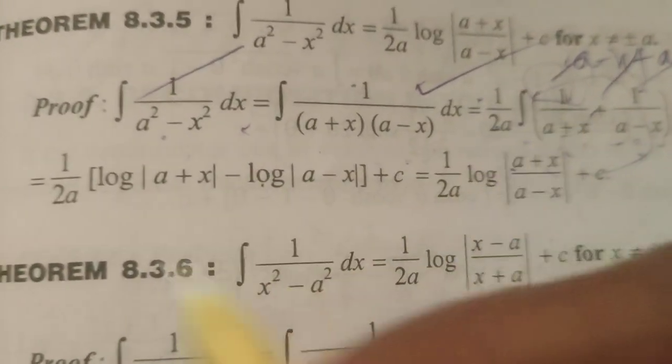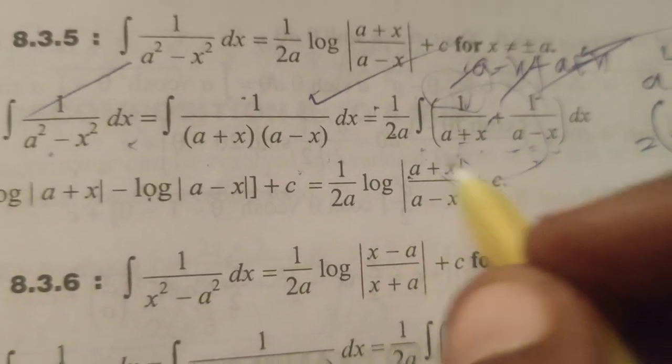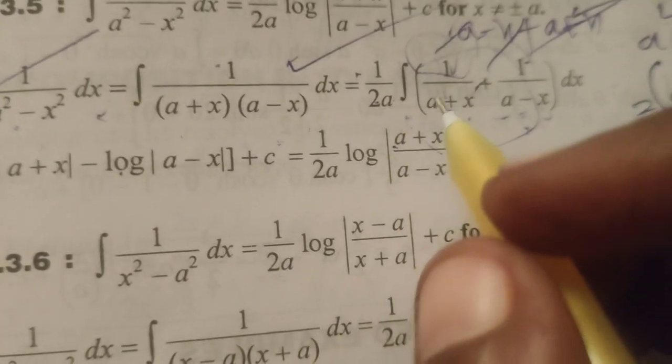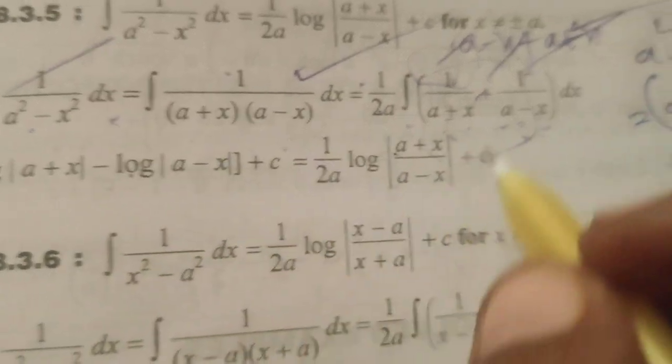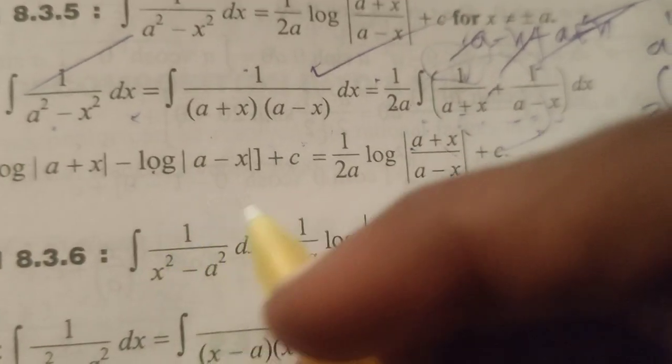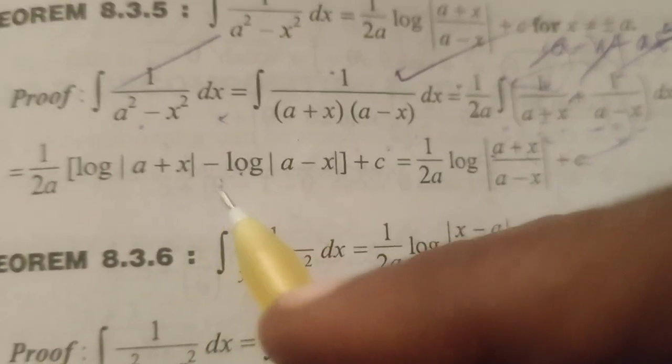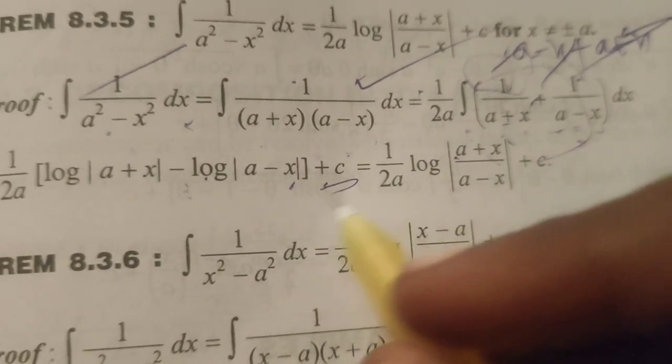Next, that 1 by 2a. Here integral of 1 by a plus x. We know the formula integral of 1 by x is log x. Here x means a plus x is there. Therefore log of a plus x, here plus log of a minus x. Again minus x means minus 1. So write minus log of a minus x. After integrating, adding the constant plus c.